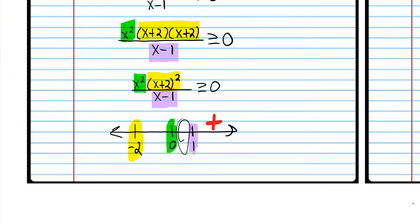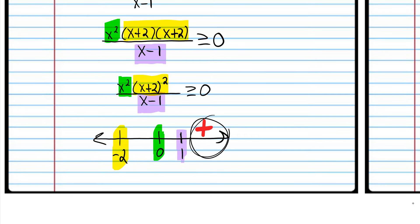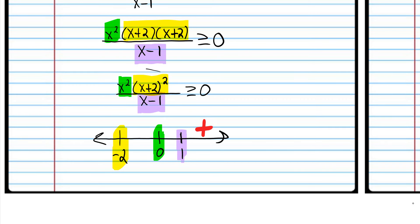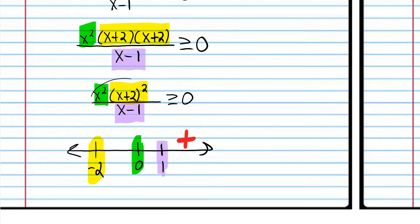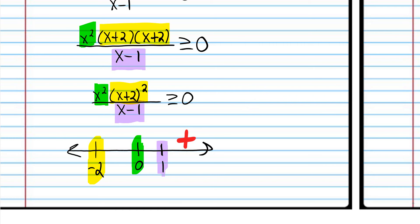Let's plug in one half. One half squared is positive, times one half plus two squared — that's positive — divided by one half minus one, which is negative. Positive times positive is positive, and positive divided by negative is a negative. So there's a negative for that interval. Now let's plug in negative one: we get a positive times a positive — because when you square it, it's positive — divided by a negative, giving another negative number.